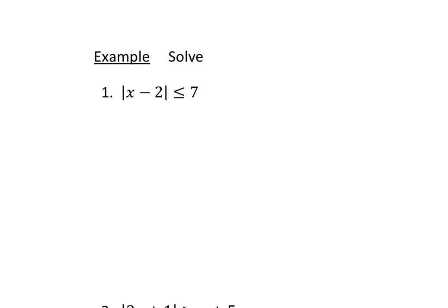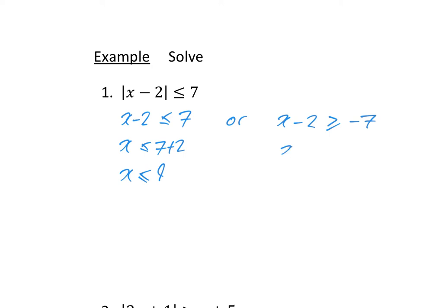Solve modulus of x minus 2 is less than or equal to 7. Positive case: x minus 2 is less than or equal to 7, so x is less than or equal to 9. Negative case: x minus 2 is greater than or equal to minus 7, so x is greater than or equal to minus 5. Those two combine as minus 5 is less than or equal to x is less than or equal to 9.